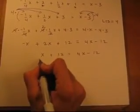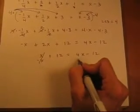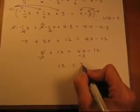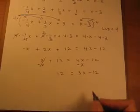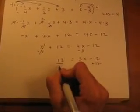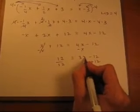Now get x's to one side. So let's subtract this x on both sides. That leaves us 12 equals 3x take away 12. Adding 12 to both sides because we want the numbers to go away from the variable.